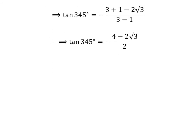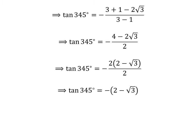Further simplification gives us tangent of 345 degrees is equal to minus 4 minus 2 times square root of 3, upon 2. Taking out the common factor 2 in the numerator and canceling it with the denominator gives us tangent of 345 degrees is equal to minus 2 minus square root of 3. Opening up the bracket gives us tangent of 345 degrees is equal to square root of 3 minus 2.